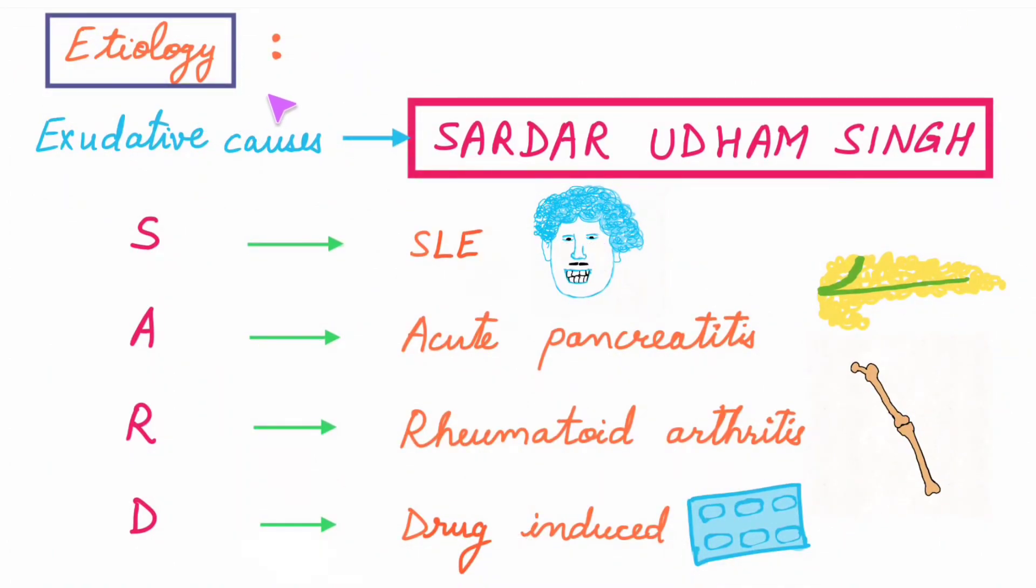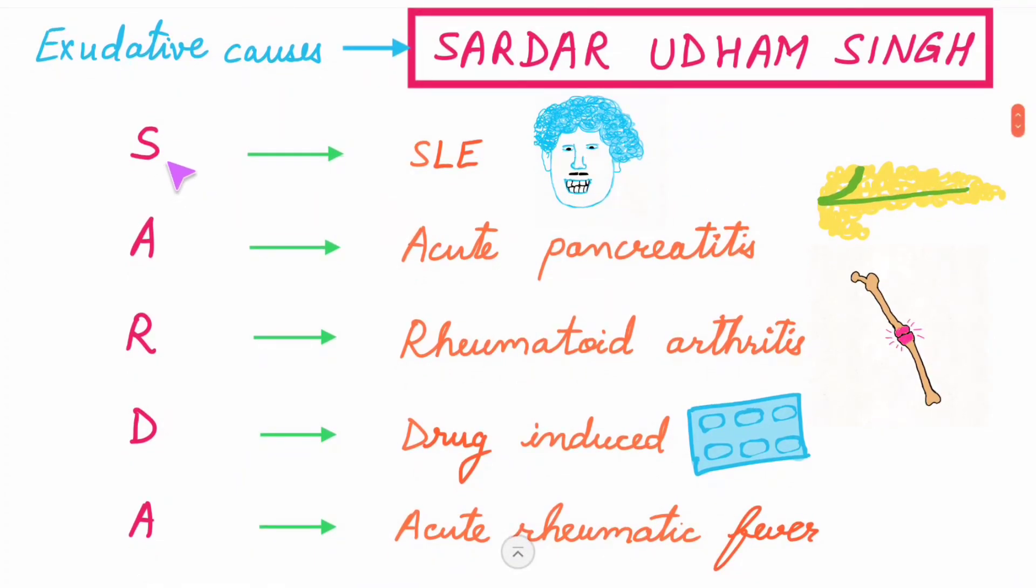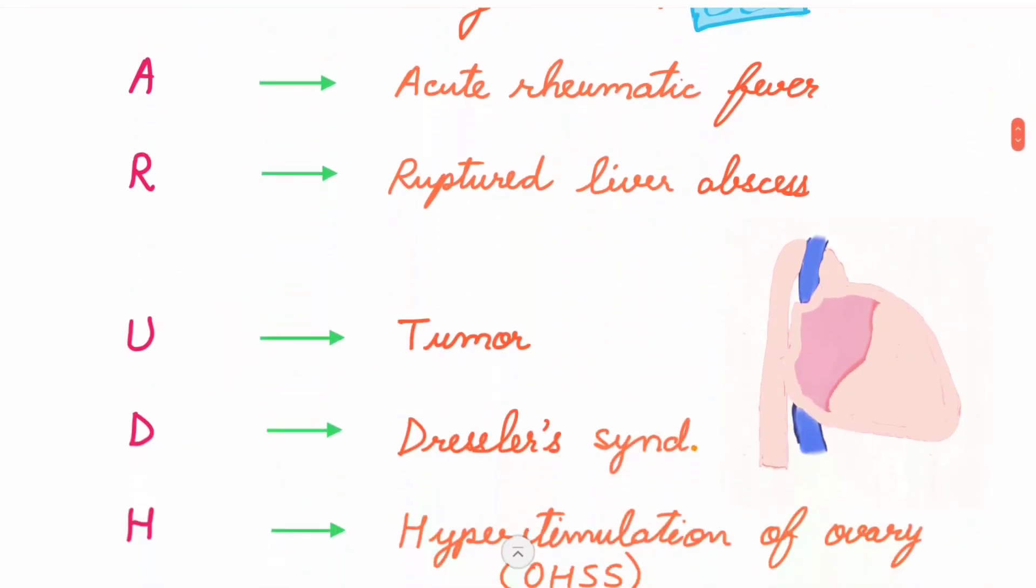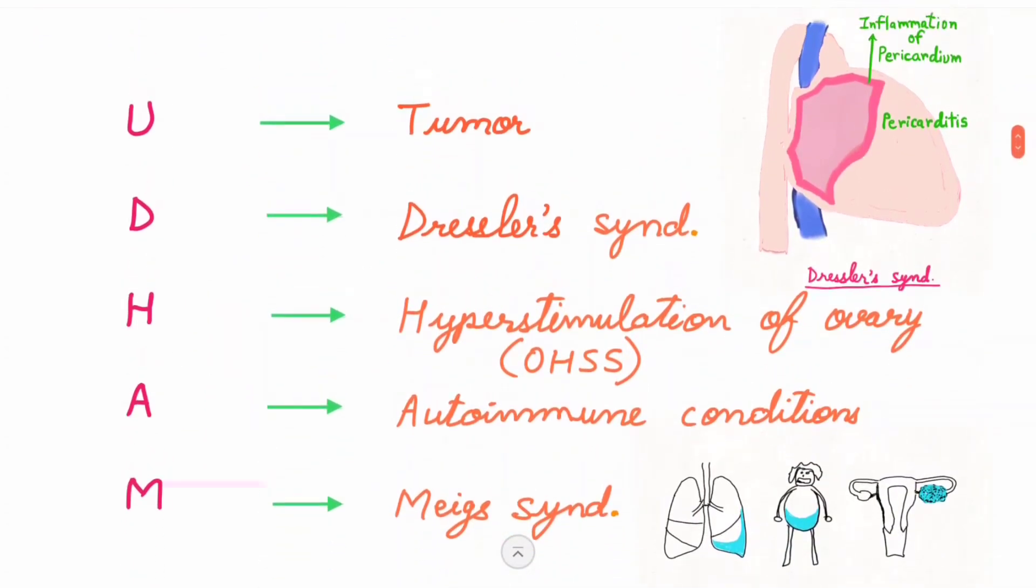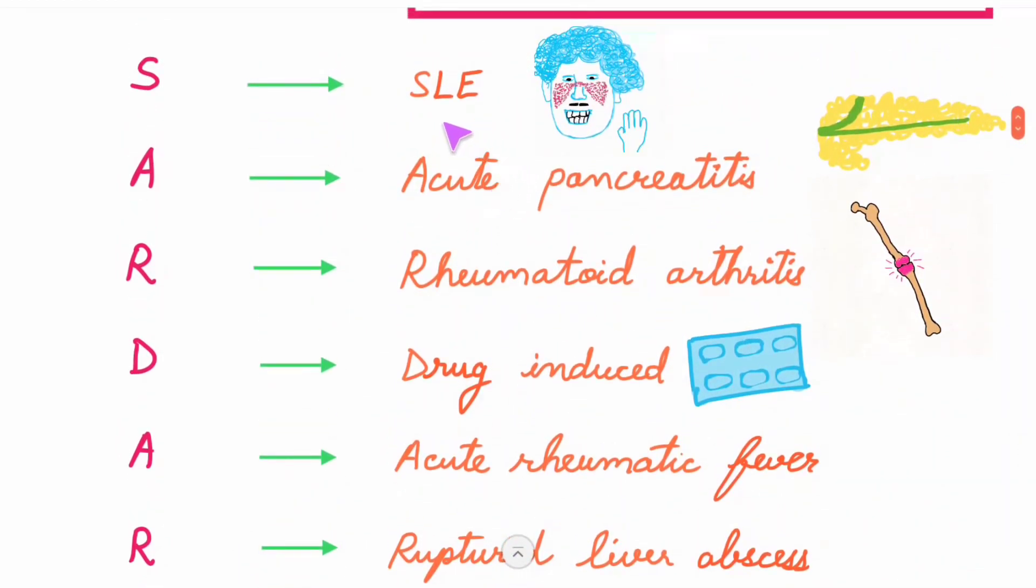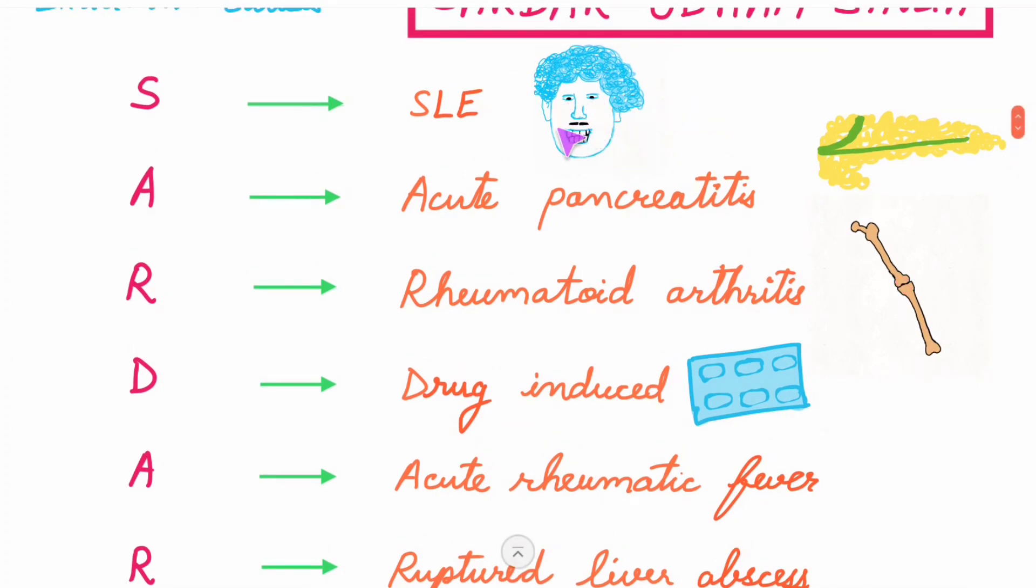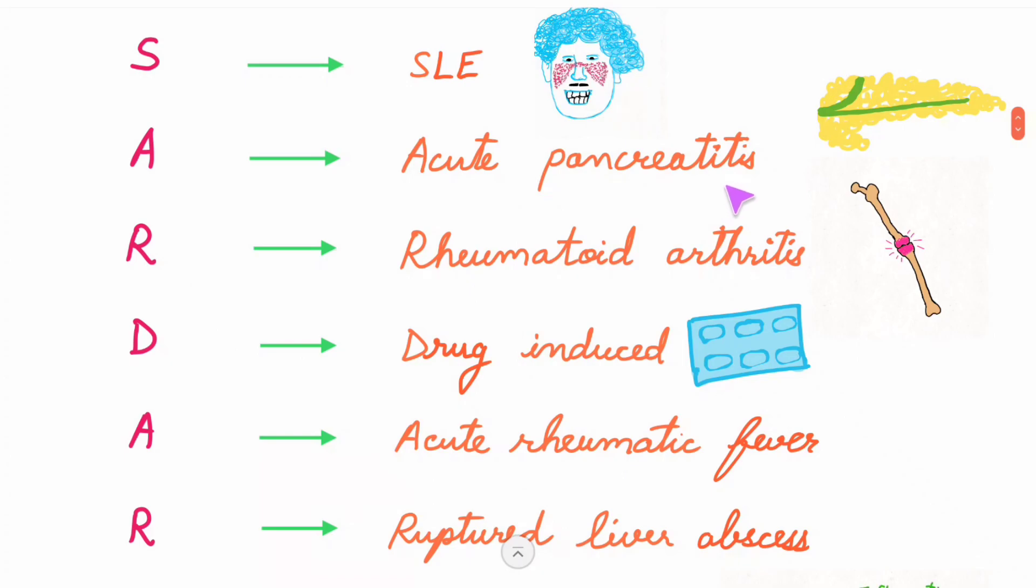Etiology of pleural effusion: there are two causes, exudative as well as transudative. For exudative causes, you must have seen the movie Sardar Udham Singh - it's a very popular Bollywood movie. So SARDARUDHAM: S for SLE. In SLE you can see here this character has got a butterfly rash on his face. A for acute pancreatitis.